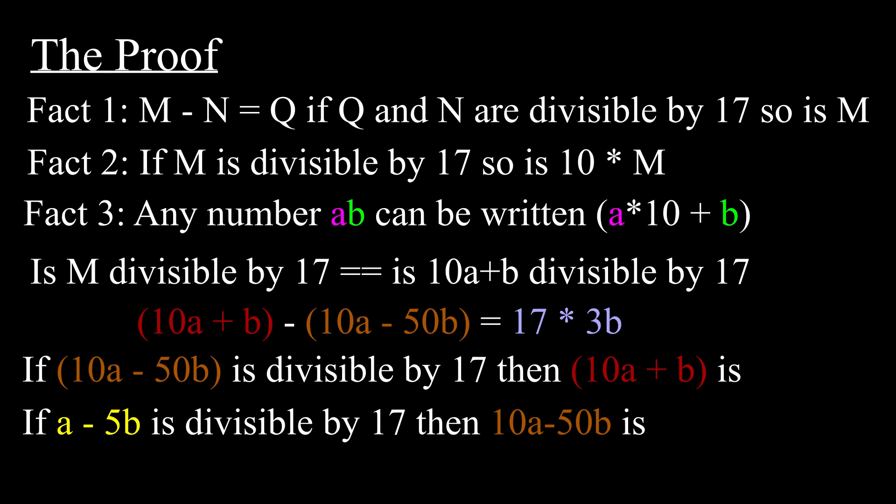Finally, by fact 2, if a minus 5b is divisible by 17, then 10a minus 50b is divisible by 17. Compiling all this, we have if a minus 5b is divisible by 17, then our number must be divisible by 17, which is what we sought out to prove.